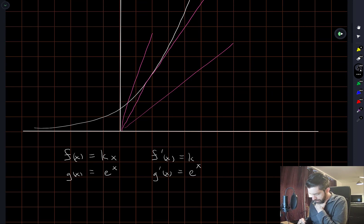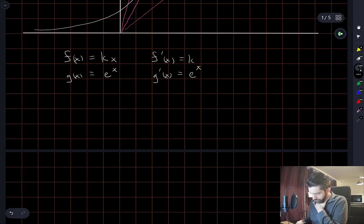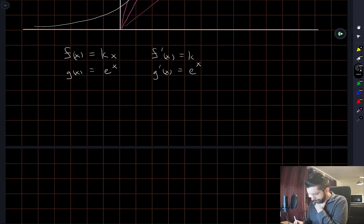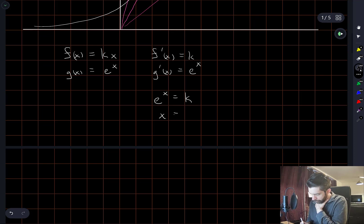If we're looking for the value of k which gives us the case where the line is tangent, then that'll happen at the value of x when e to the x is equal to k. This gives us x is equal to log of k.